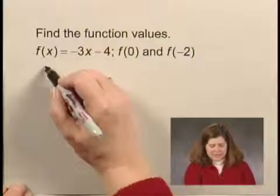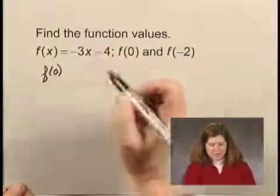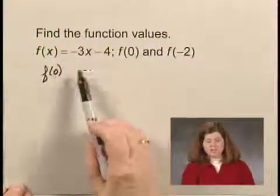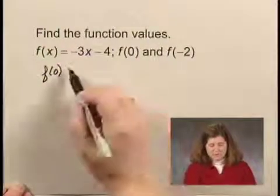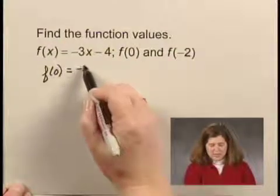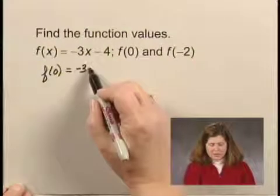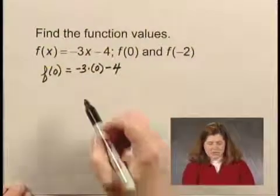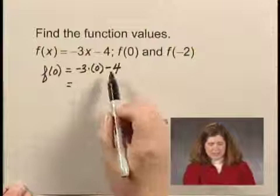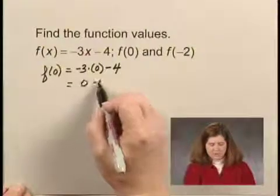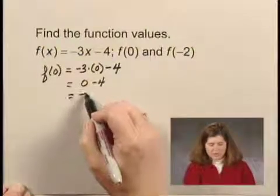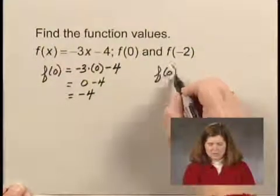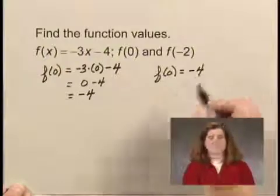To find f of 0, we substitute 0 for x wherever it appears in the expression that defines the function. So f of 0 would be negative 3 times 0 minus 4, which is 0 minus 4 or negative 4. So f of 0 equals negative 4.